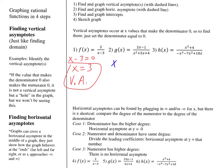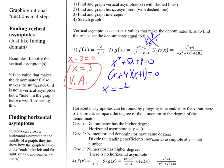For number two, set the denominator equal to 0 and solve — this one requires factoring. Think of two numbers that multiply to 4 and add to 5: that's 4 and 1. With an a-value of 1, we get x plus 4 times x plus 1 equals 0. So we actually have two vertical asymptotes: x equals negative 4 and x equals negative 1.